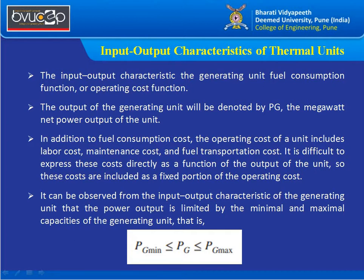The input is measured in units of fuel consumption, and the incremental cost depends on the type of boiler and turbine used. The output of the generating unit is Pg, the net megawatt power output. Along with fuel consumption cost, we consider operating cost, which includes labor cost, maintenance cost, and fuel transportation cost. These are treated as fixed proportions; only the incremental cost for power generation is variable.